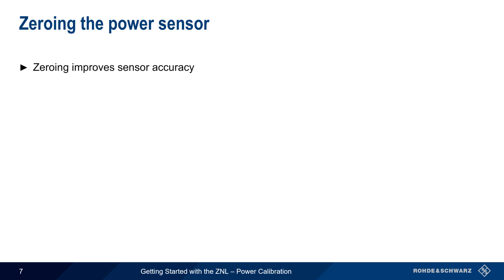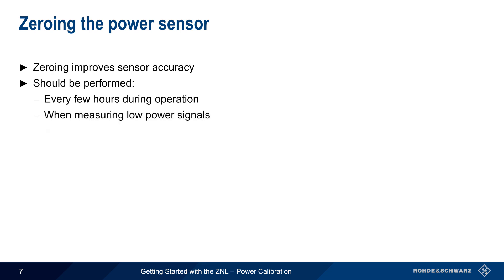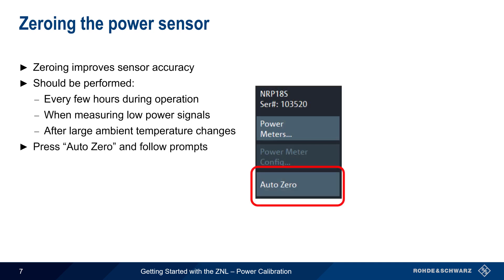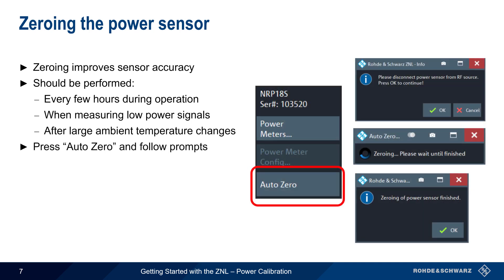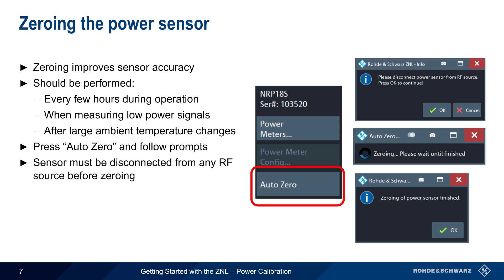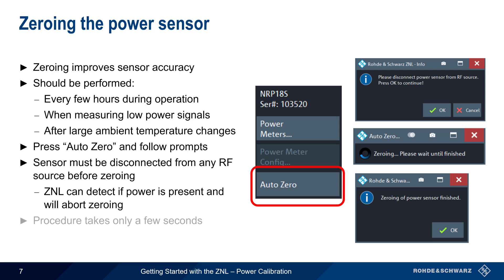Zeroing the selected power sensor will improve sensor accuracy. Zeroing should be performed every few hours under normal conditions, but it's particularly important when measuring lower power signals or after a large change in ambient temperature. The sensor must be disconnected from any source of RF power during zeroing, but in most cases the ZNL will automatically abort the test if it detects that power is present at the sensor. The entire zeroing process typically takes only a few seconds.